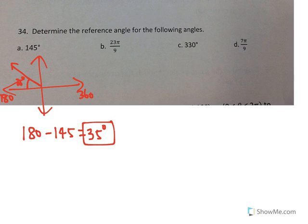And likewise, we can do the same thing for part B. We know that 2π is actually 18 over 9. That's 2π, meaning one full circle. So we're moving beyond that. And so we take another 9, that would be 27π.